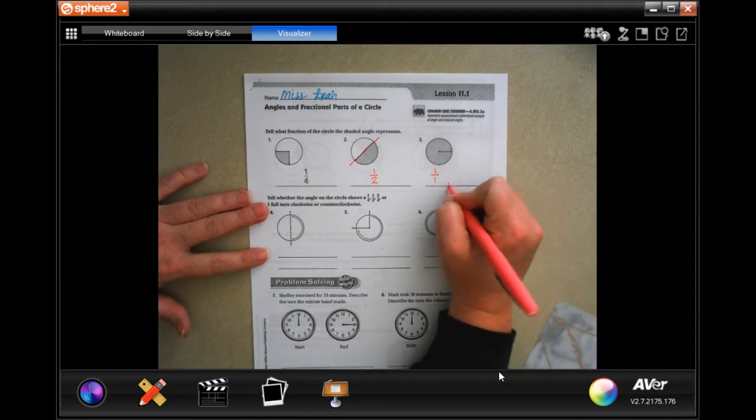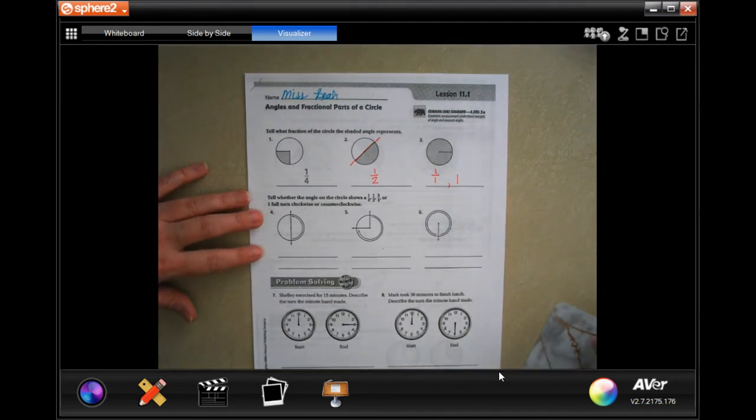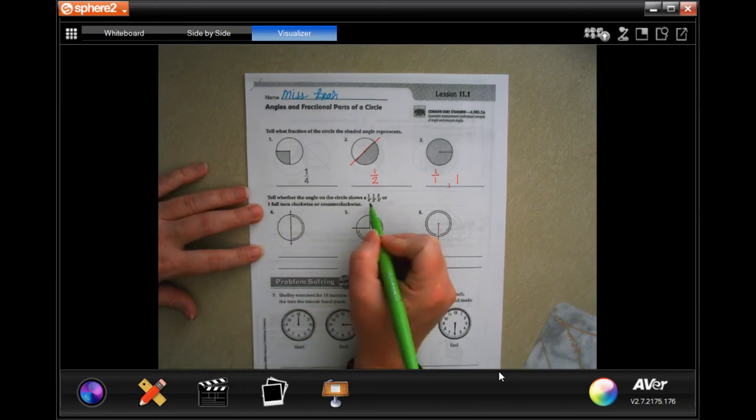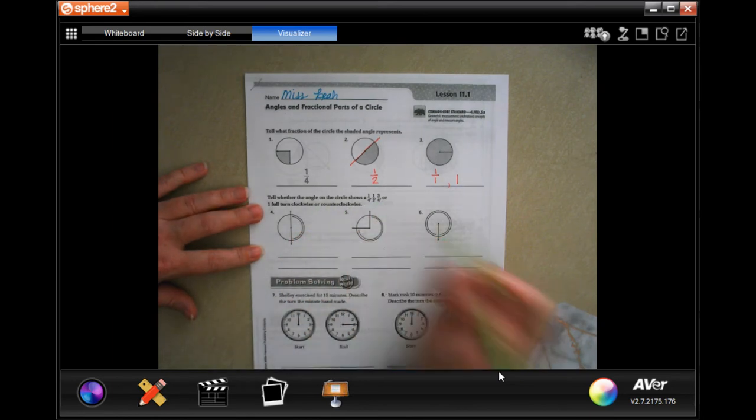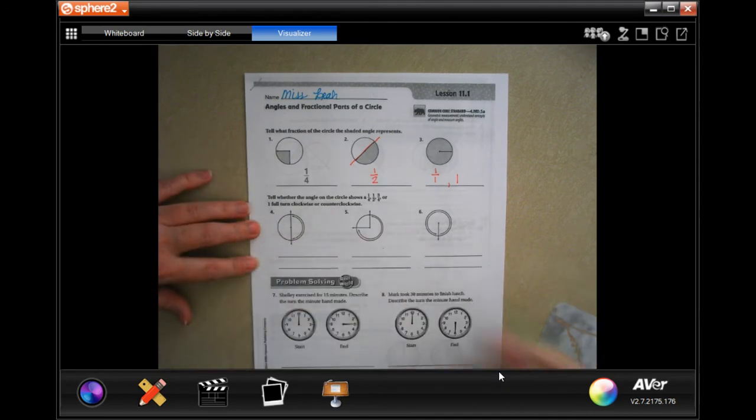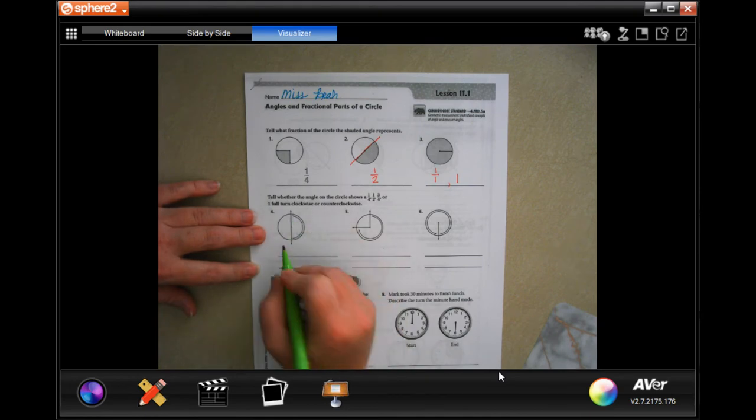On the next part it wants us to tell whether the angle shown is a quarter, a half, three quarters, or a whole one. So that one's about a half.